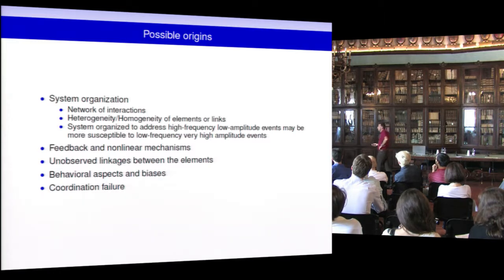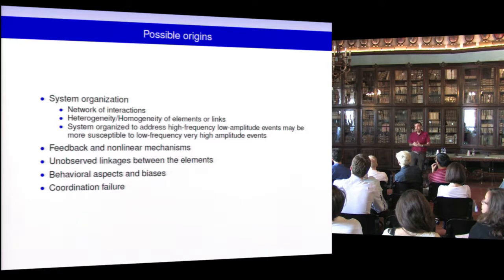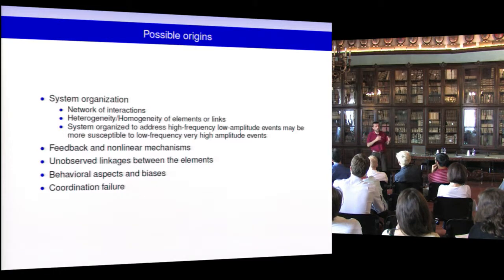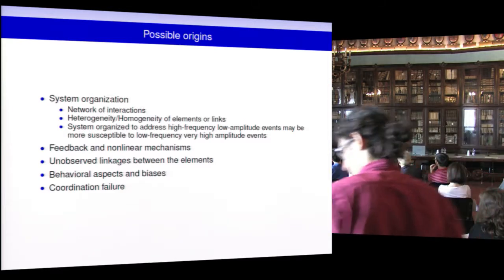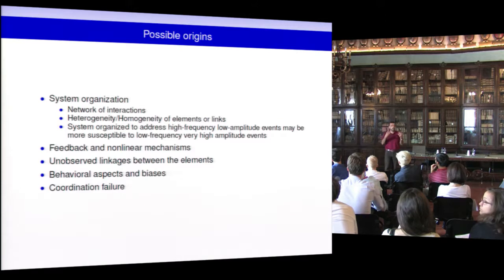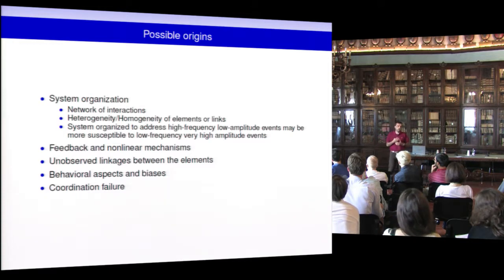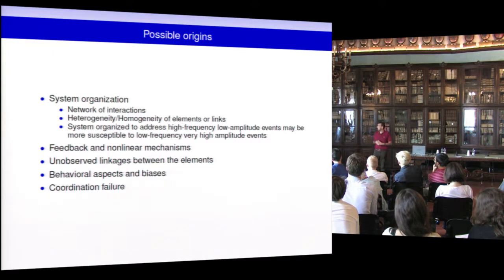What are the possible origins? First is the system organization. There is a lot of interest about how the system is organized and how prone it is to systemic events. This is related to the network of interactions among agents. Very often the assumption of mean-field interaction — where everyone interacts with everyone else — is not observed, and the network structure can create systemic risk. You also have the problem of heterogeneity: in economic and financial systems there is very strong heterogeneity in terms of size, which has very often not been considered properly in modeling.